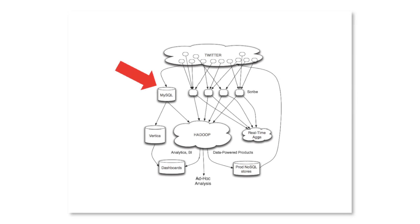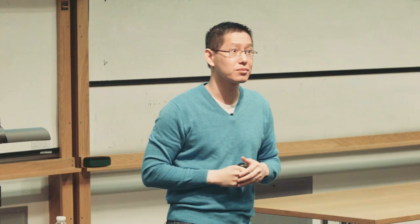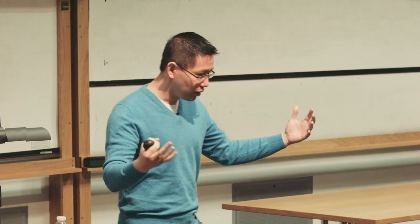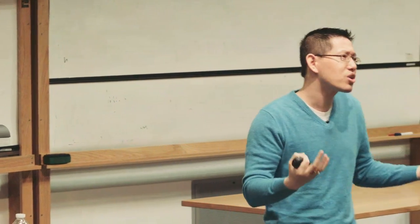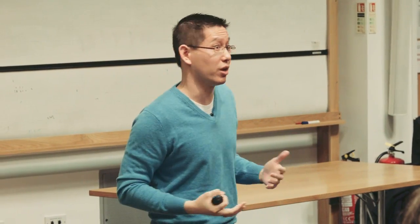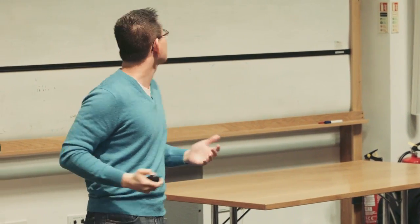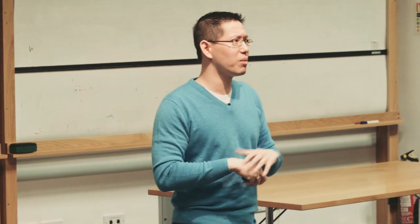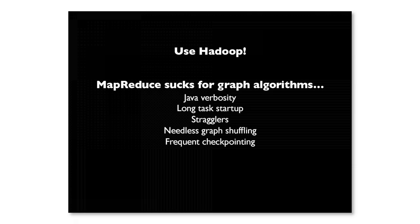FlockDB talks to the front end of Twitter, and the graph periodically gets ingested into the Hadoop data warehouse. The most obvious solution is: we have this Hadoop data warehouse, we want to build graph recommendation algorithms, so let's just use Hadoop. Some of you familiar with this area might already know that the MapReduce programming model on top of Hadoop really sucks for graph algorithms. There's been a whole series of papers in the last five to seven years documenting this fact.